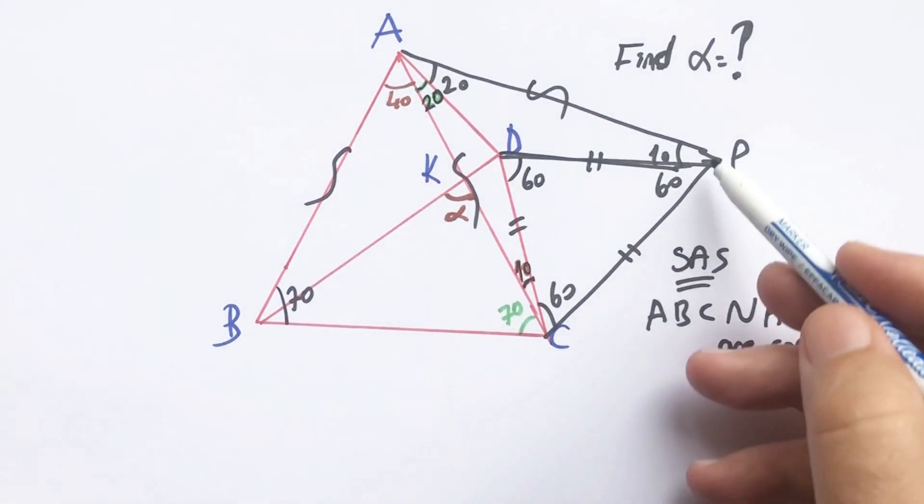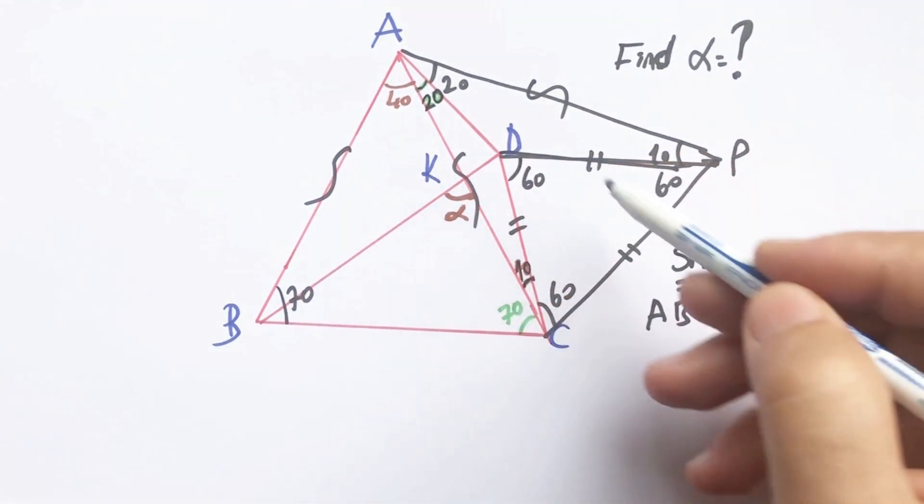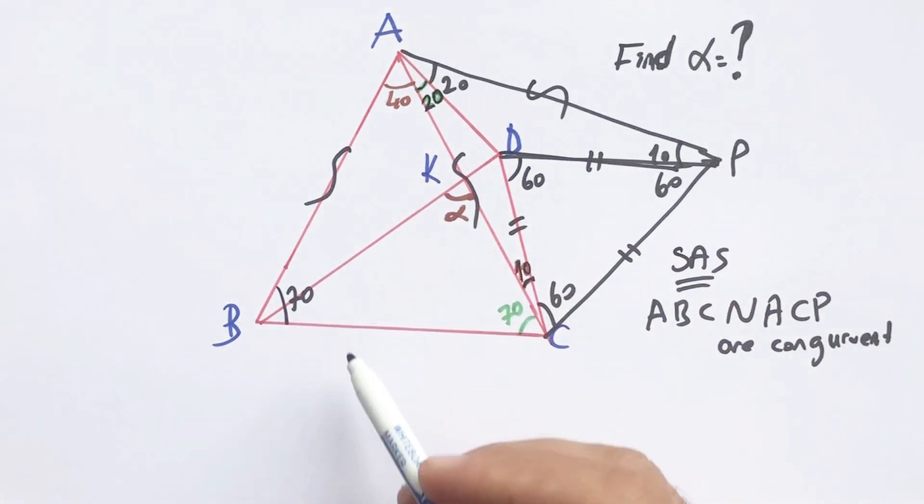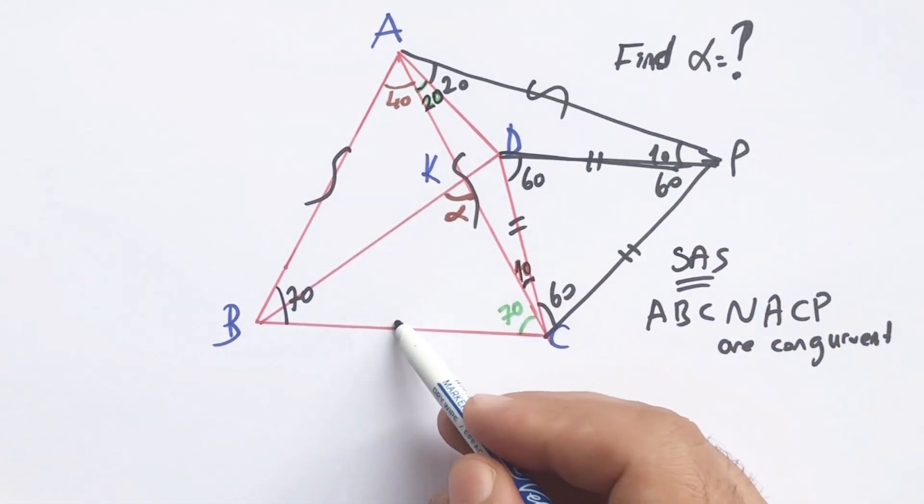So, the length which is across the 40 degrees must be equal.